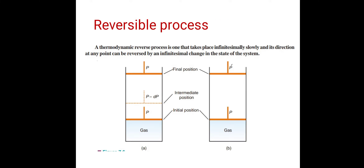What is a reversible process? A thermodynamic reversible process is one that takes place infinitesimally slowly, and its direction at any point can be reversed by an infinitesimal change in the state of the system. So reversible processes take place infinitesimally slowly.